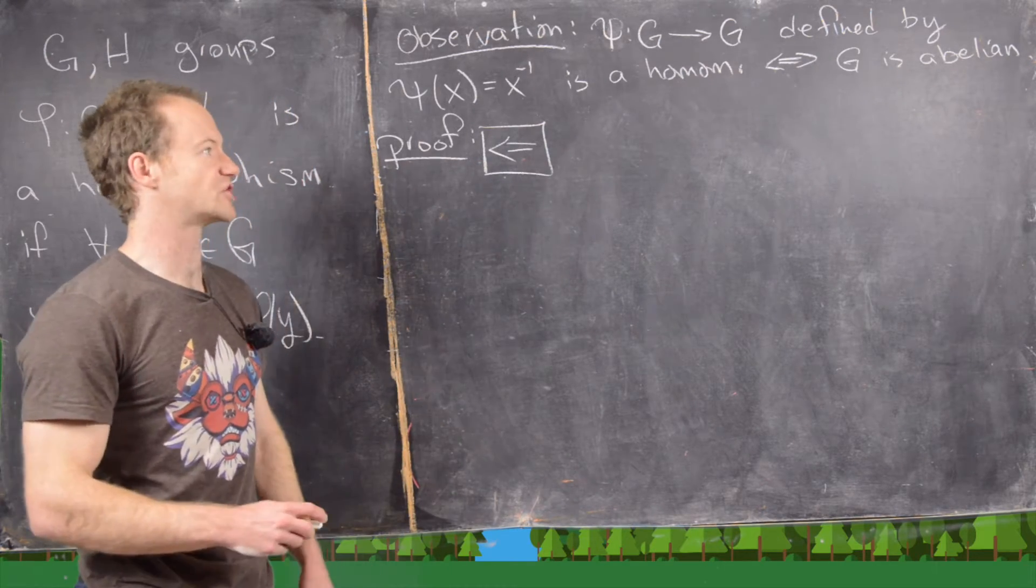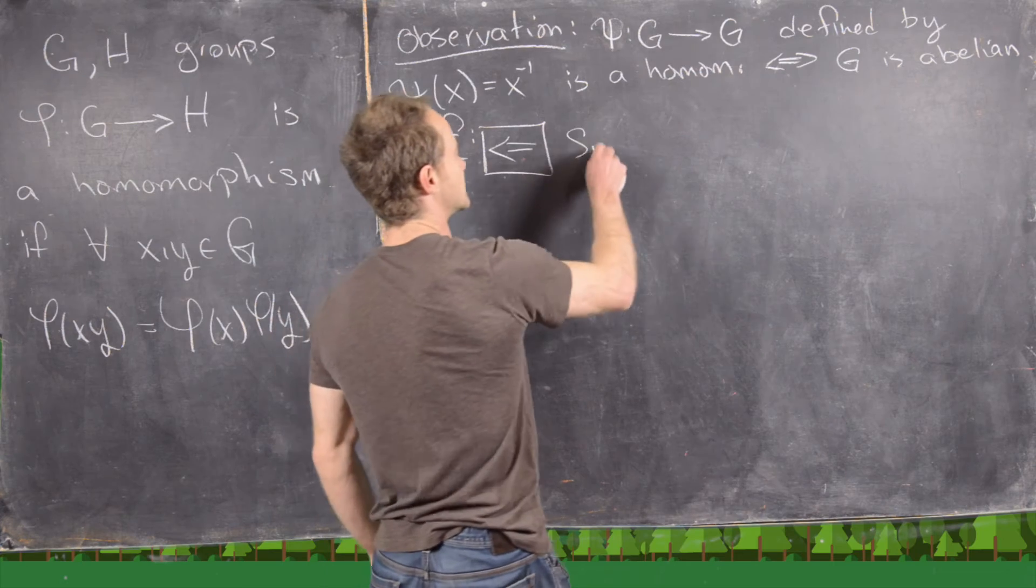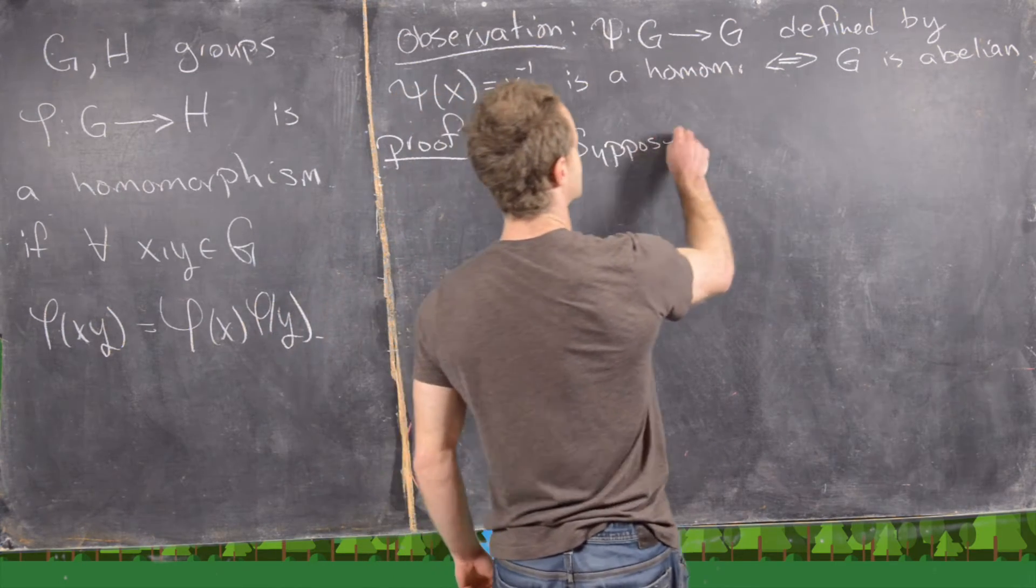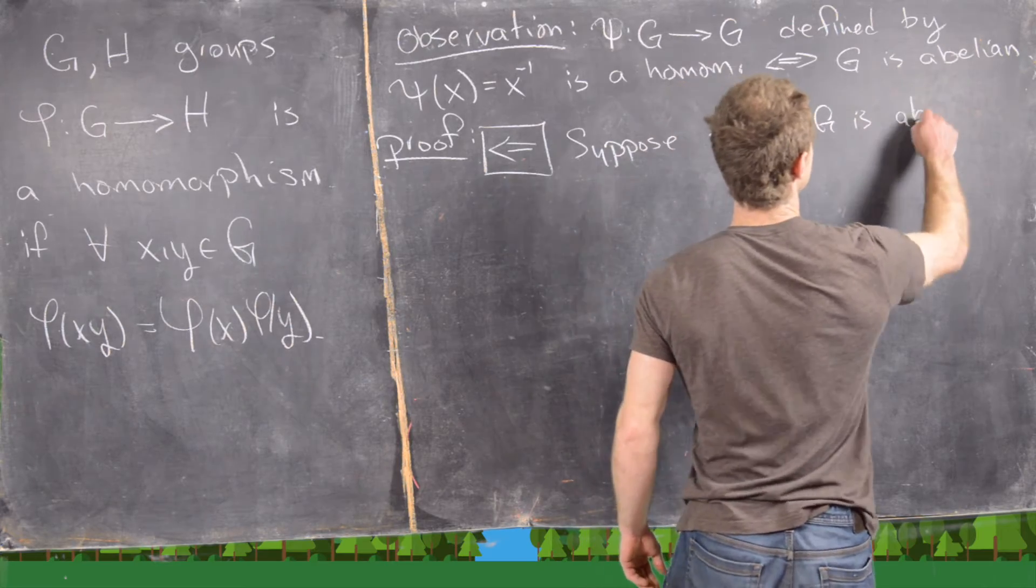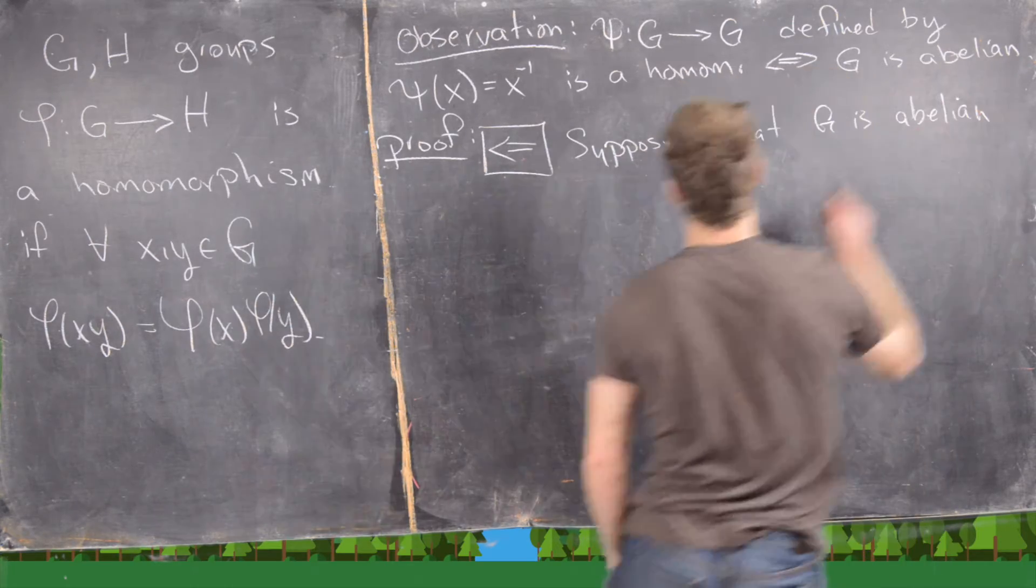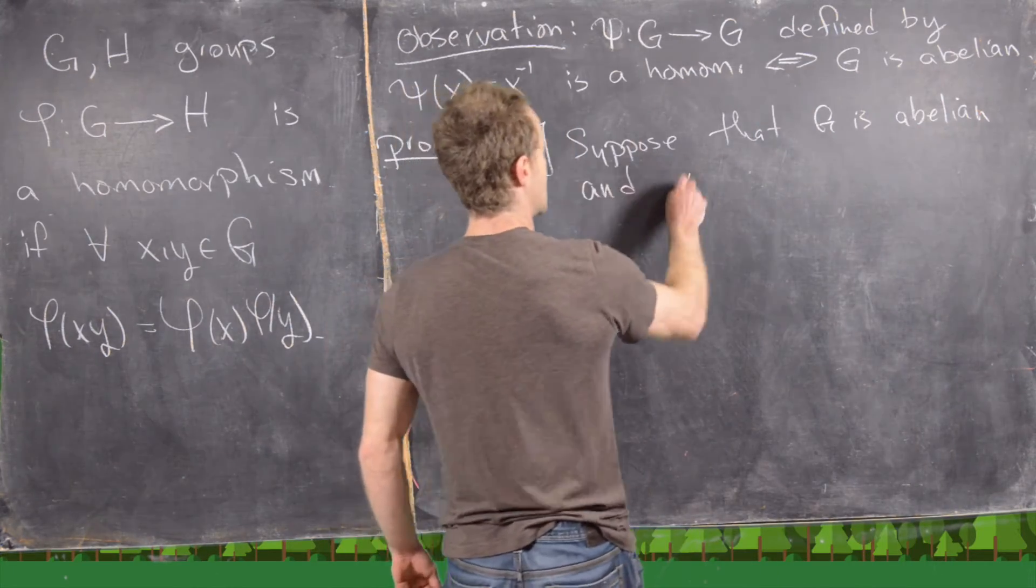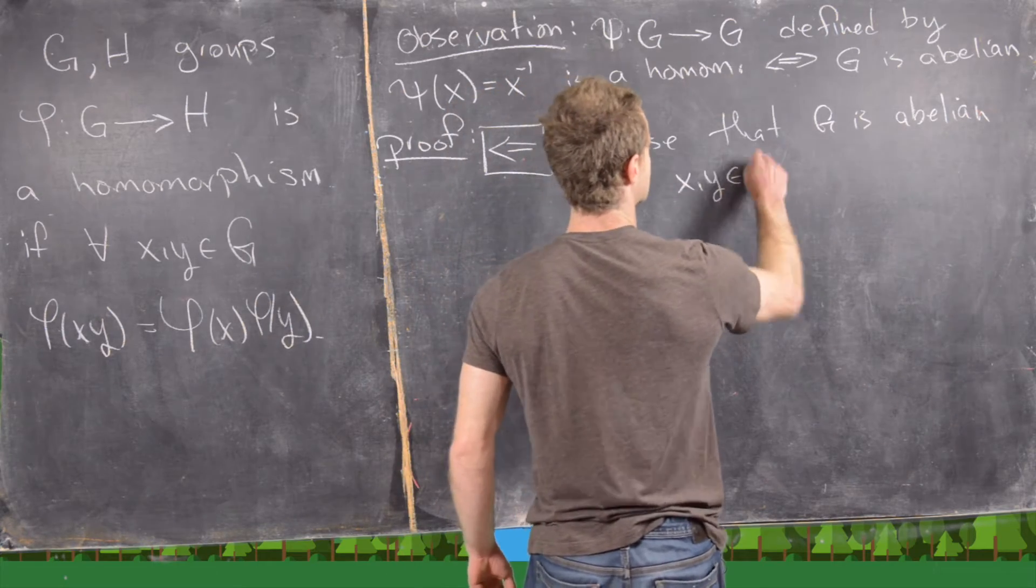Let's prove the reverse direction first. In other words, let's go ahead and suppose that G is abelian and x and y are elements from G.